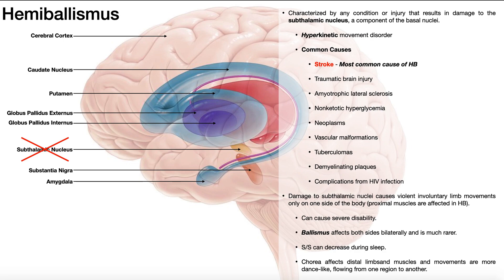Hemiballismus is a secondary condition that's really caused by anything that causes damage to the subthalamic nucleus, which is a component of the basal nuclei. You can see the basal nuclei right here — this long tail is the caudate nucleus, this is the putamen, in purple we have the globus pallidus, the thalamus is in red, and beneath the thalamus we have this yellow structure — that's the subthalamic nucleus. Hemiballismus is caused by damage to this subthalamic nucleus.